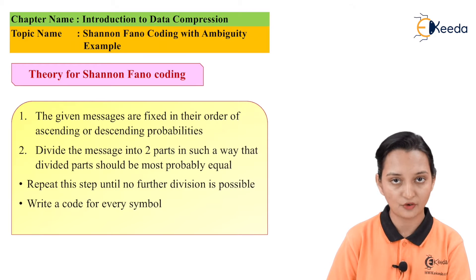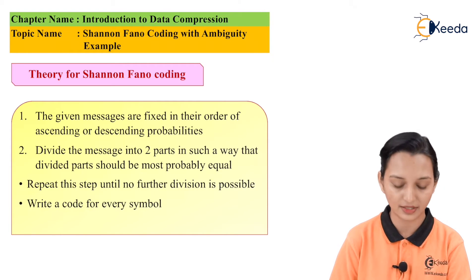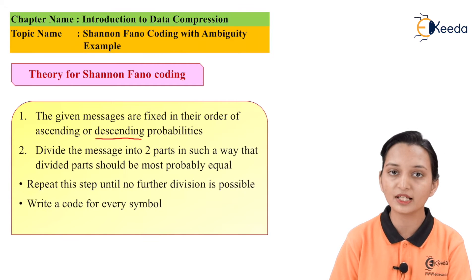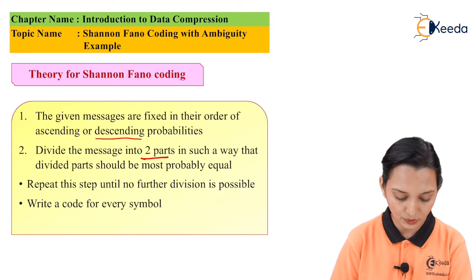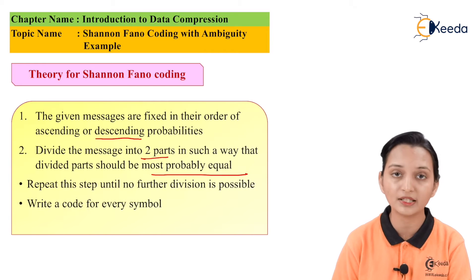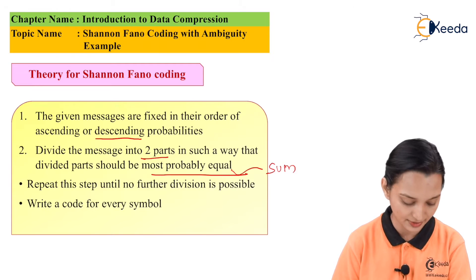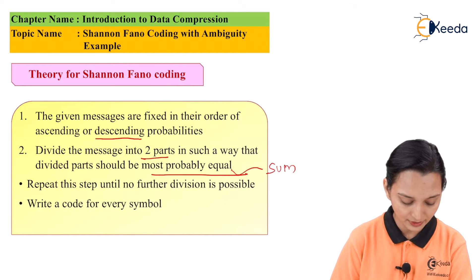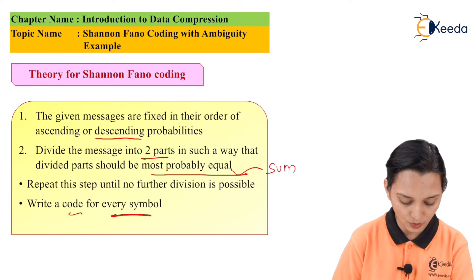There are a few rules which we have already seen in the previous lecture. The given messages are arranged in descending order of probabilities, because descending order gives maximum efficiency. Second, divide the messages into two parts such that the divided parts are most probably equal in terms of the sum of their probabilities. Third, repeat this step until no further division is possible, then write down the code for every symbol.